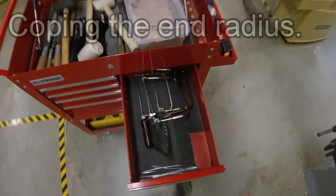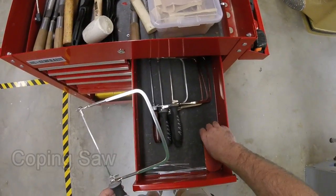The next step is coping the radiused end. To do that, you'll need a coping saw and a pattern.